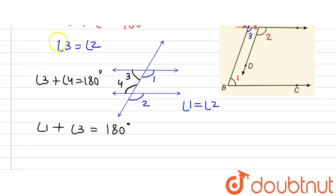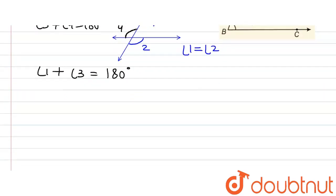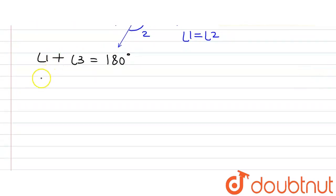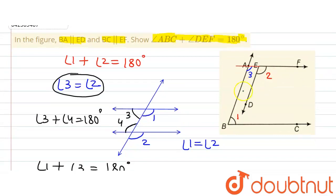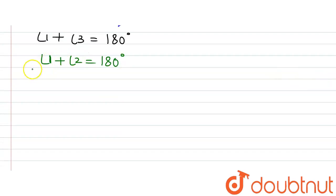We have proven that angle 3 is equal to angle 2 because they are corresponding angles. So replacing angle 3 with angle 2, we get angle 1 plus angle 2 is equal to 180 degrees. Since angle 1 is angle ABC and angle 2 is angle DEF, we can write angle ABC plus angle DEF equals 180 degrees. This is what we were required to prove. Hence proved.